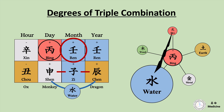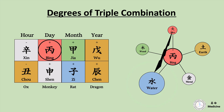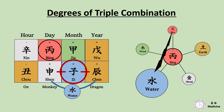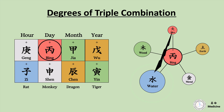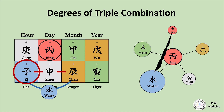So the power of water energy becomes enormous. If someone's chart has the same triple combination and middle branch Zi water is located at the monthly branch with all characters side-by-side, but without any water heavenly stem, the water energy of this chart is still huge, but not as strong as the previous situation. When someone's chart looks like this — here is still a triple combination of water, but the middle branch Zi water is now at the hourly branch. All three characters are still side-by-side, but the middle branch is not in the middle out of the three branches. So the power of combination is considered to be smaller than the previous two cases.